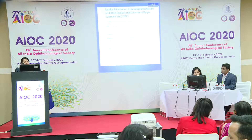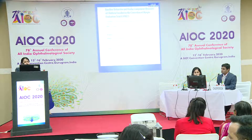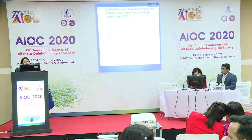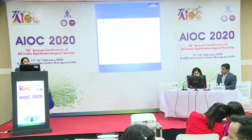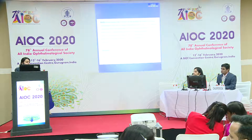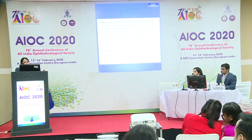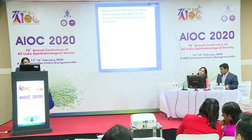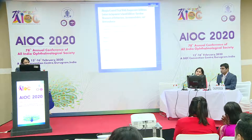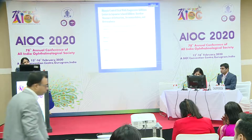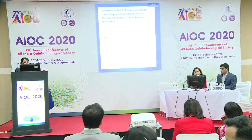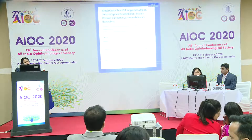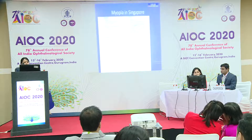The baseline refractive and ocular component measures of the largest trial, the COMET trial, shows that they had taken children from 6 to 12 years with myopia ranging from 1.25 to 6 diopters. In a Japanese school children study, we find similar data: 95 children from 1.25 to 6 diopter spherical equivalent, aged 6 to 12 years.